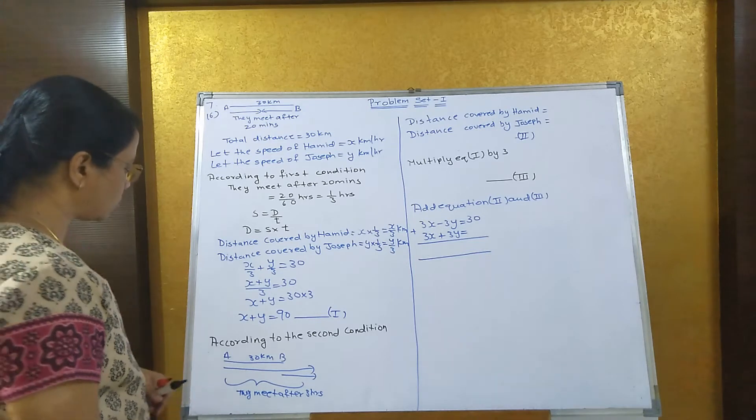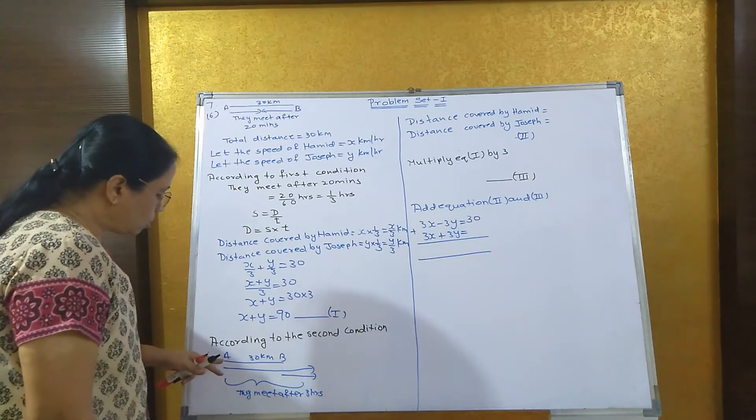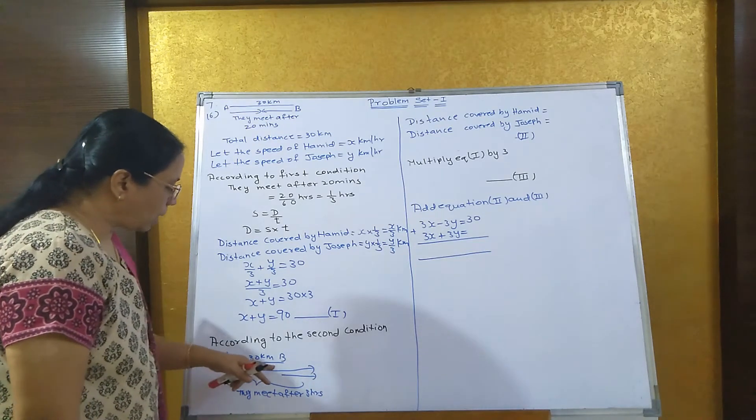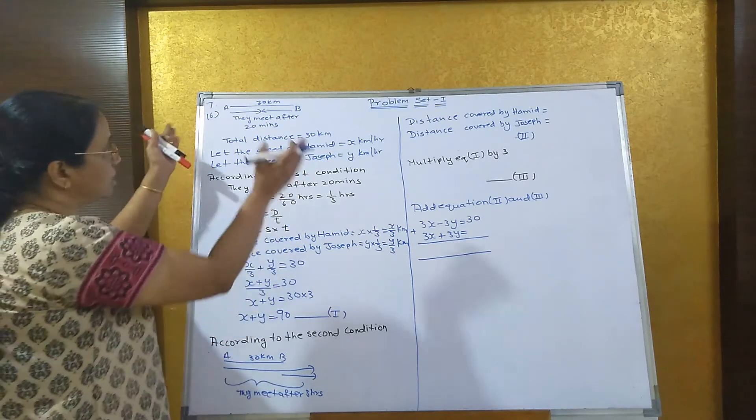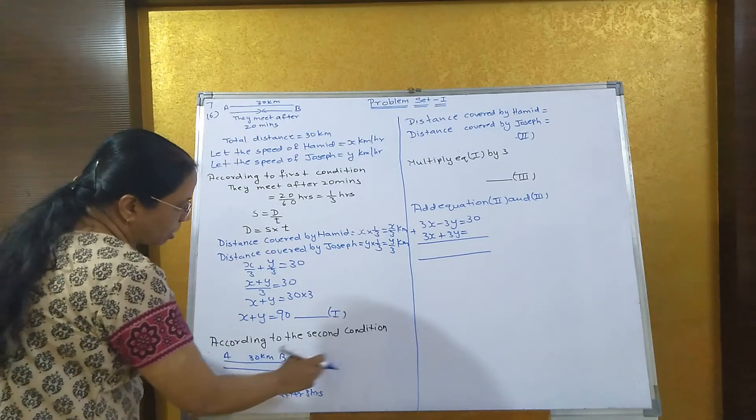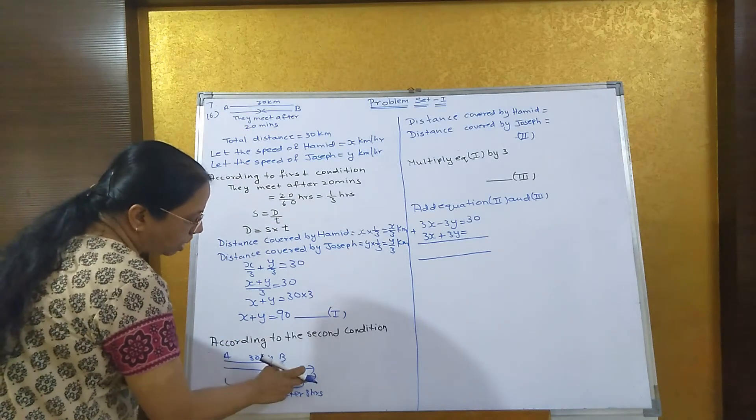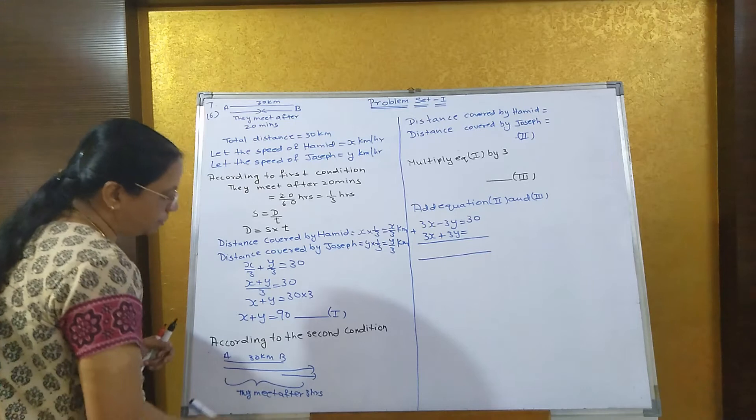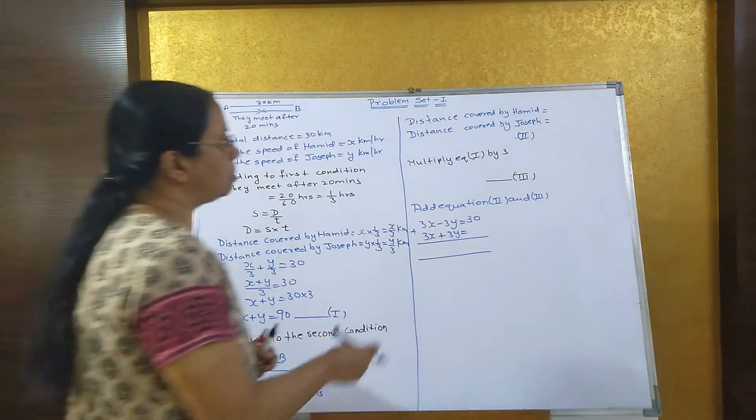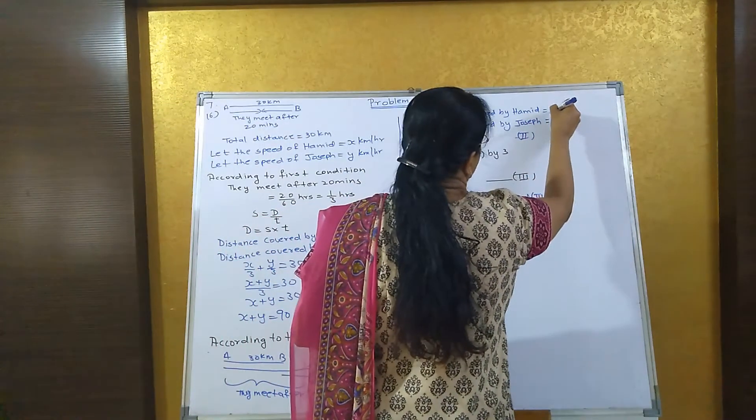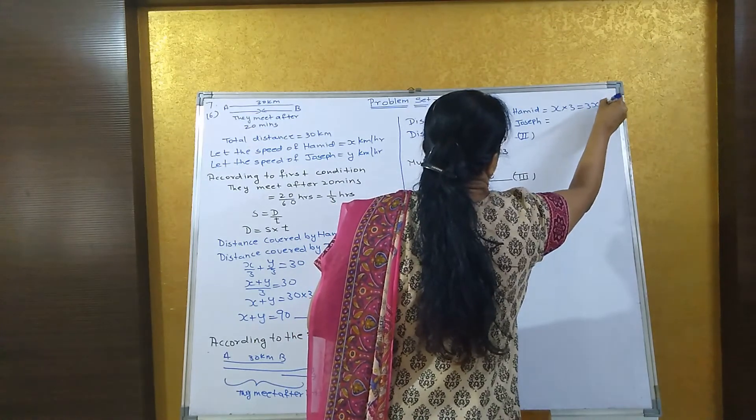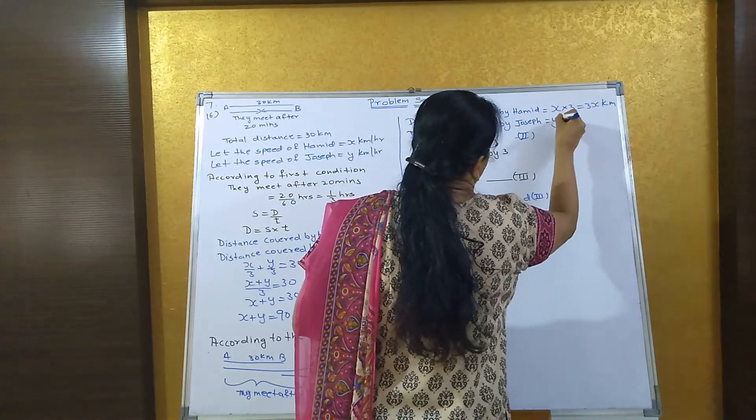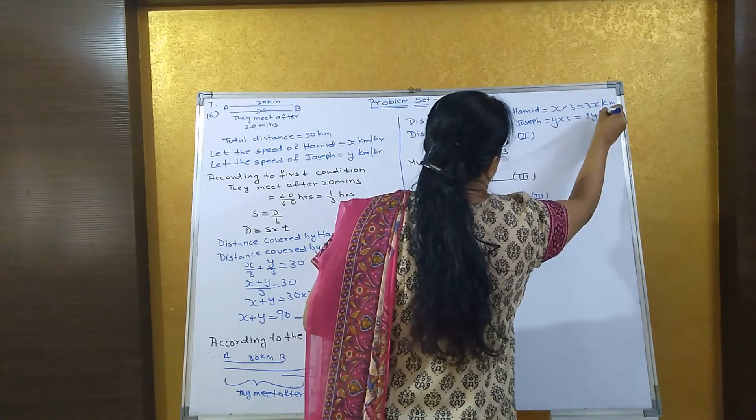Now according to the second condition, again Hamid goes from position A and Joseph from position B, but instead of going in opposite directions, they go in the same direction and meet after 3 hours. Distance covered by Hamid is x into 3 hours, equal to 3x km. Joseph is y into 3, equal to 3y km.